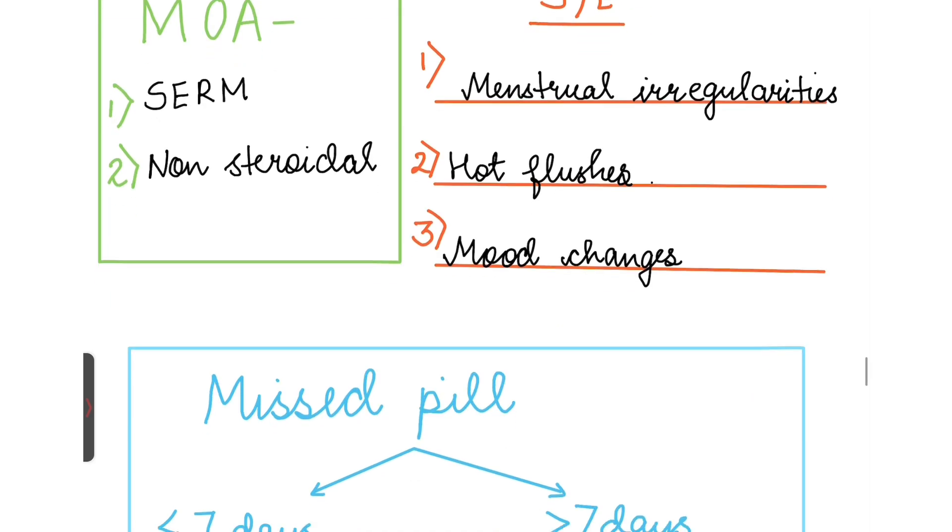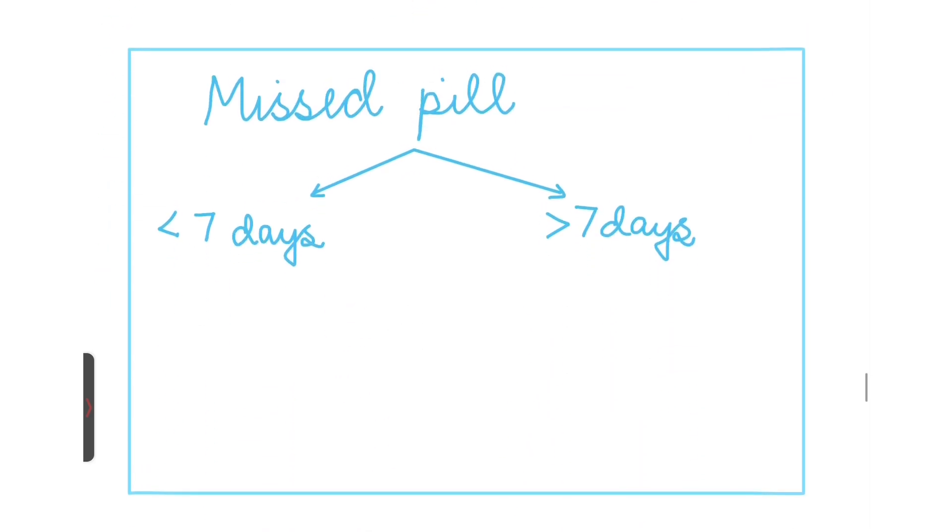What should we do if we miss a pill? If less than 7 days have passed since I have missed the pill, I will take the pill when I remember it. I will use alternate contraceptives for 7 days and continue the schedule.